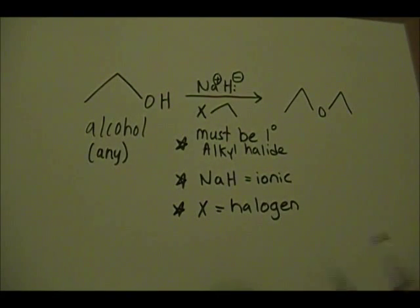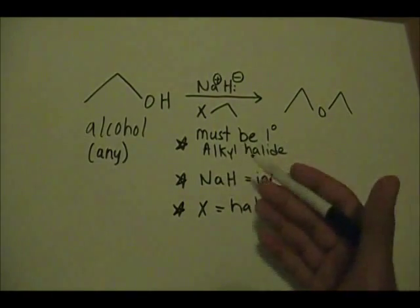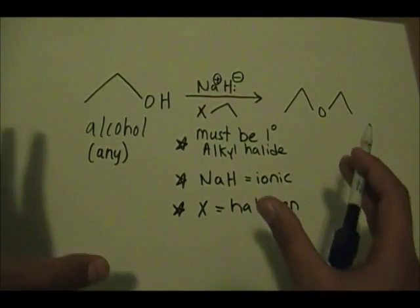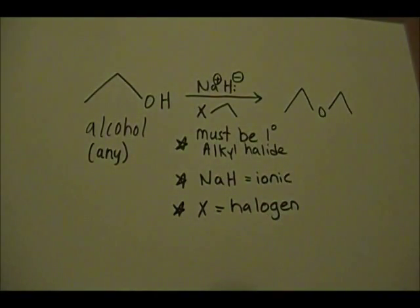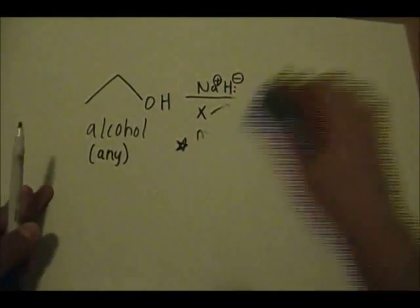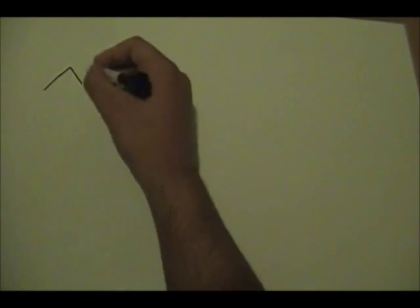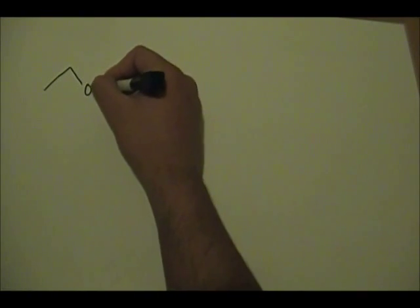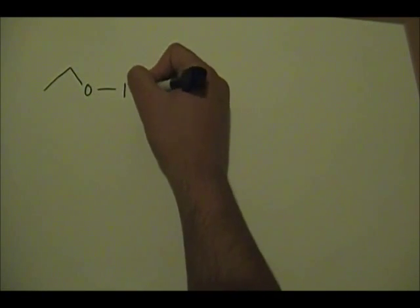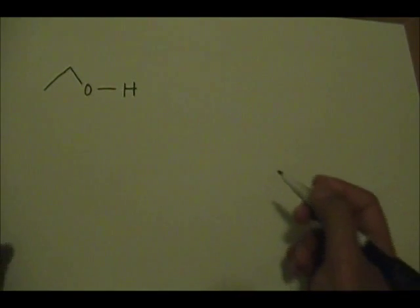So let's go over the reaction mechanism. I'll use the same example. If this is your alcohol, we'll draw the bond between the oxygen and the hydrogen.